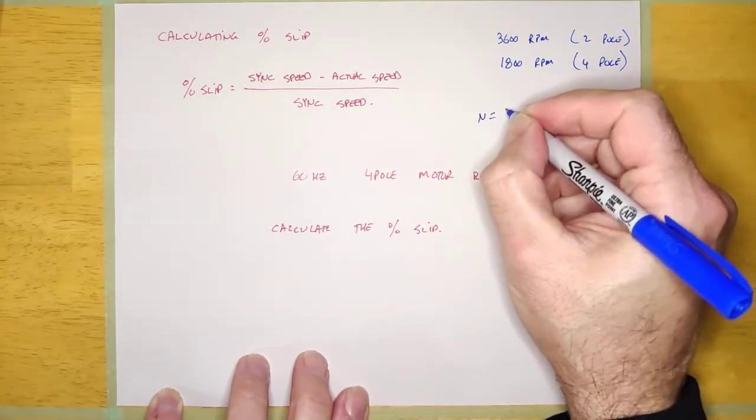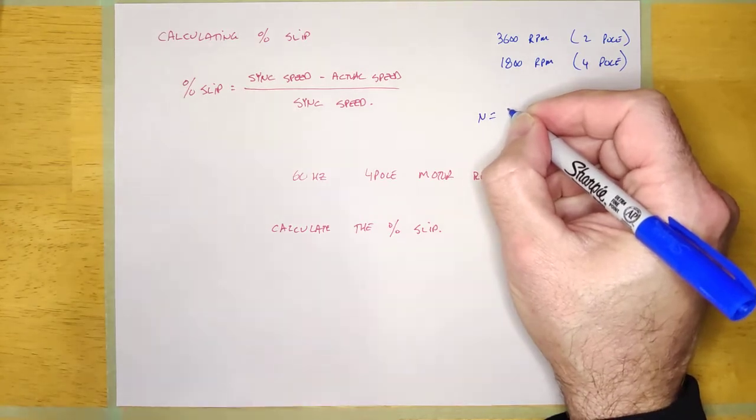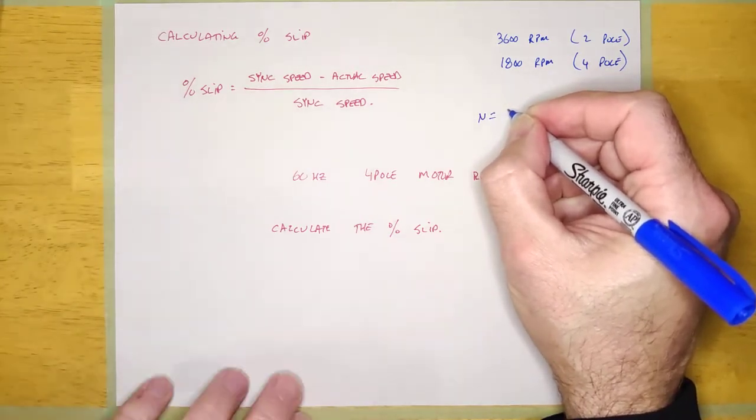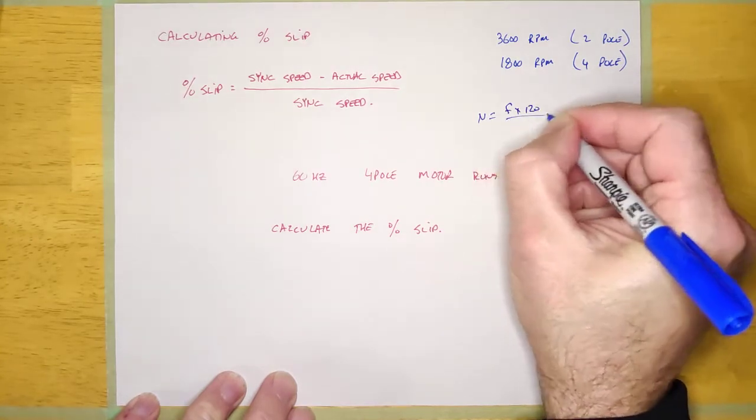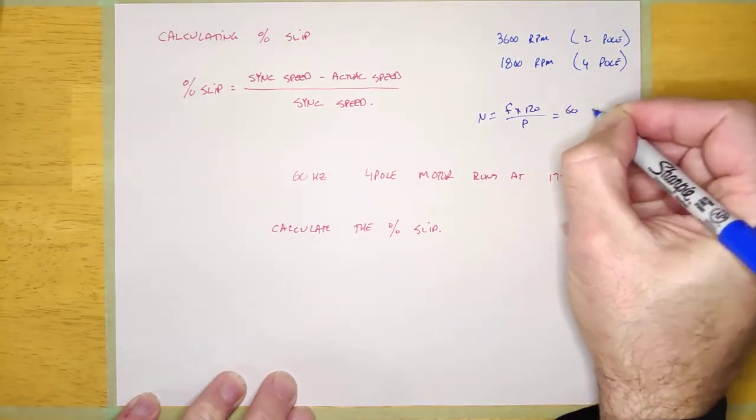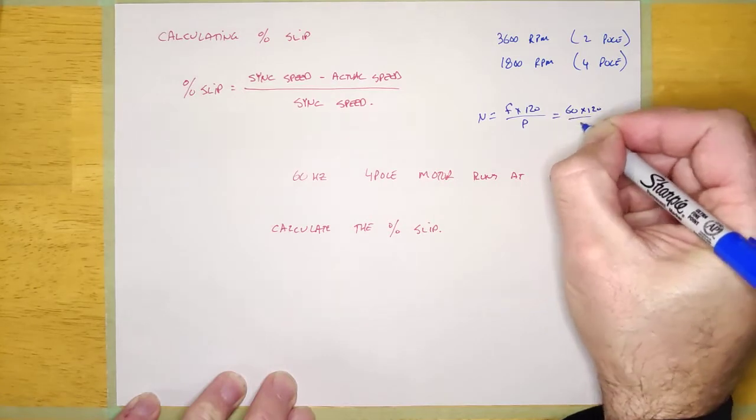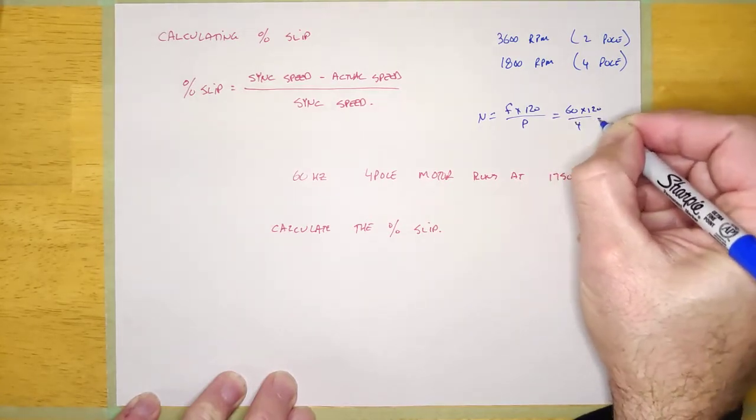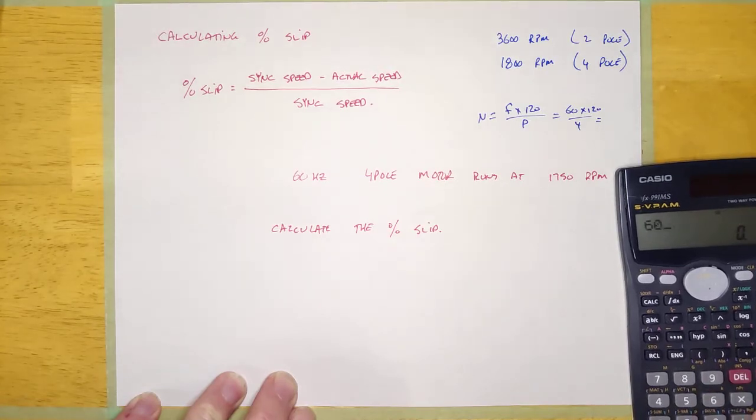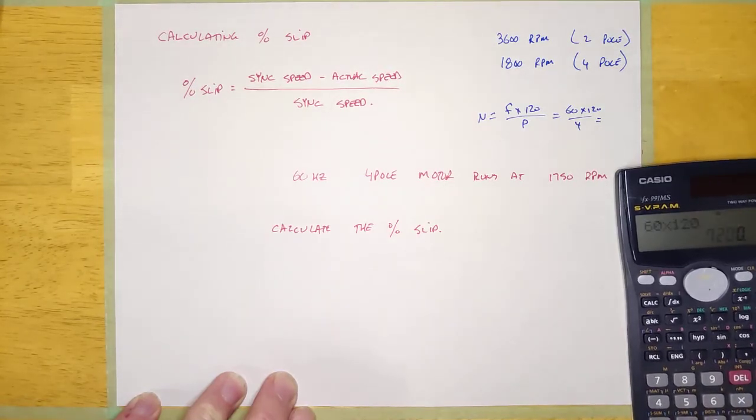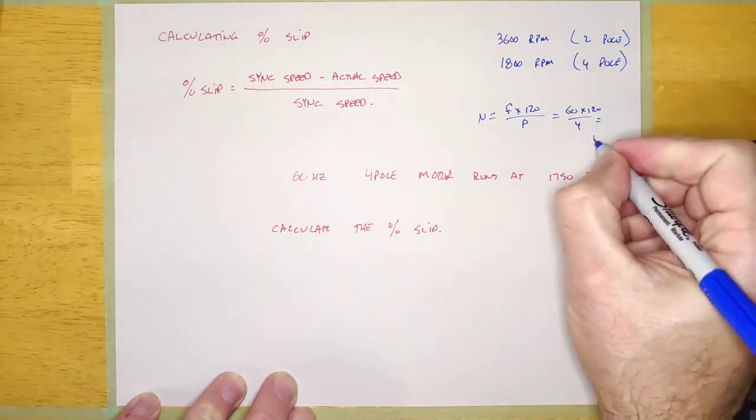N is equal to, what is it again? I can't even remember the formula right here. F times 120 over P. And so it's 60 times 120 over 4, and you can see that if I calculate that, 60 times 120 equals divided by 4 equals 1,800 RPM.